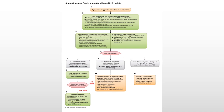For a STEMI under 12 hours, the goal is cath lab within 90 minutes, or fibrinolysis medication administered within 30 minutes. For a non-STEMI with high risk for acute coronary syndrome, according to the American Heart Association we would monitor and treat with heparin and nitroglycerin, though in very high-risk cases they may still go to the cath lab. If the EKG is normal and the patient is at low risk, we watch and work them up for other causes of chest pain.